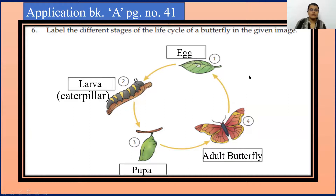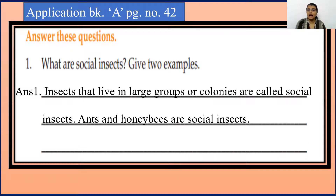Now we will start with the next worksheet, that is worksheet 4.4, question number 1. What are social insects? Give two examples. So insects that live in large groups or colonies are called social insects. Ants and honeybees are social insects. Along with that, termites are also considered social insects.